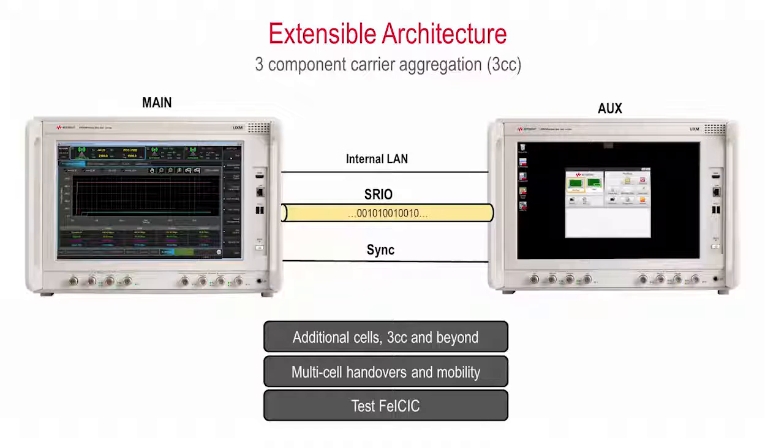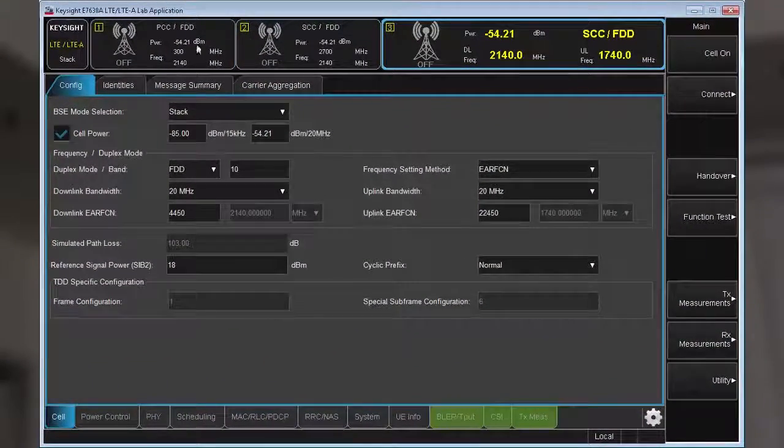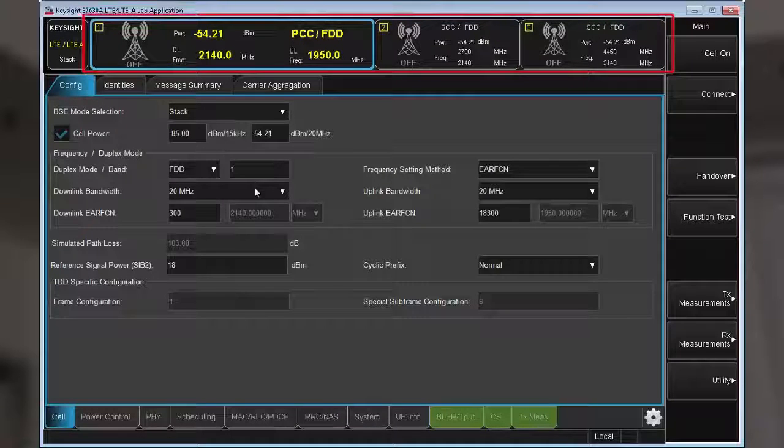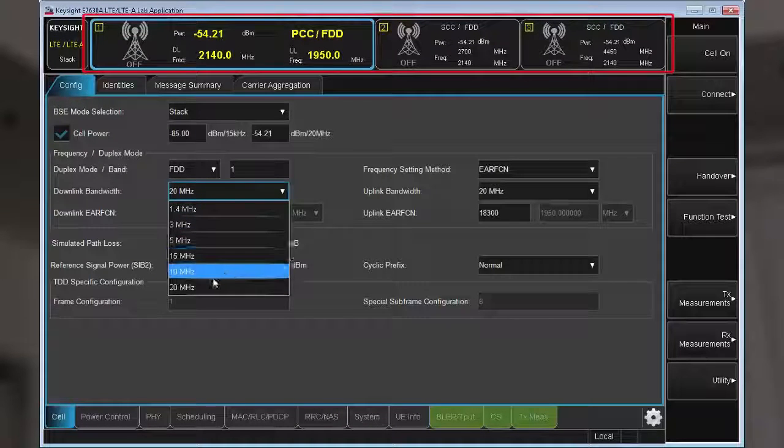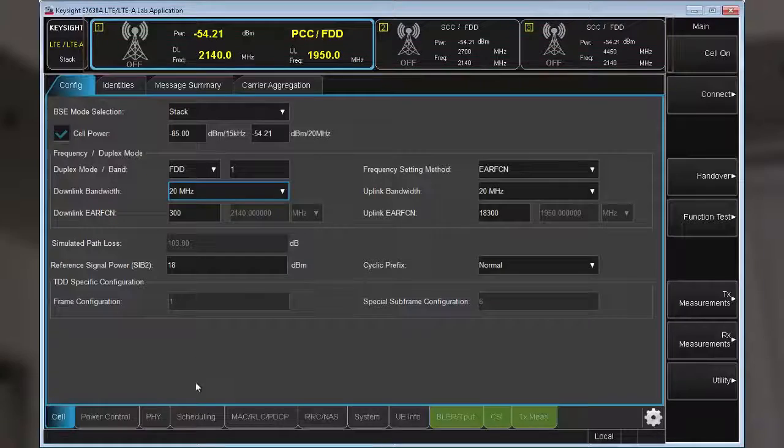The settings for all cells in both test sets are easily accessed through the main UXM. With the single user interface on the main UXM, you can see all three cells on the cell bar and set each cell to specific bands according to your aggregation scenario.